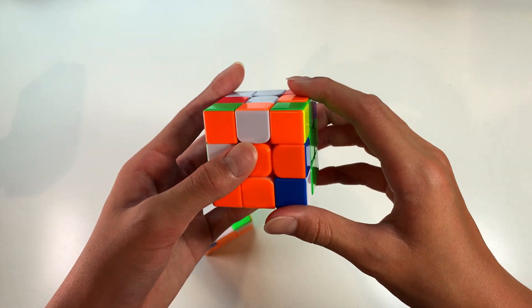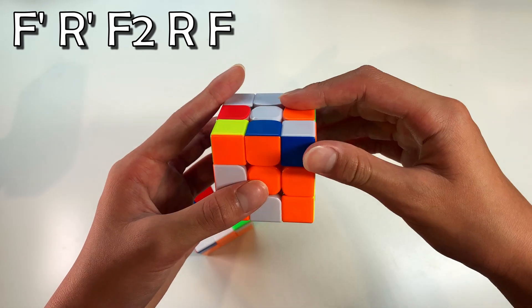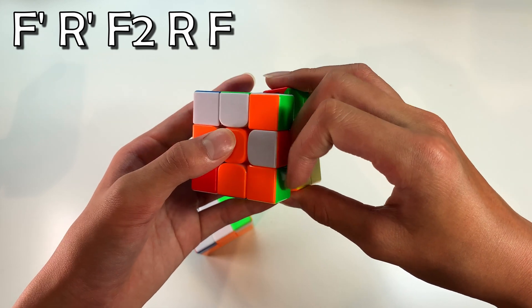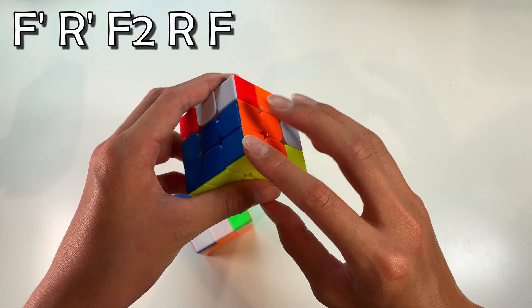If you're facing it from the front, what you can actually do is F' move to move the edge into the top and you do R', F2, R and then that will pair them up and you can do a F to solve the cross.